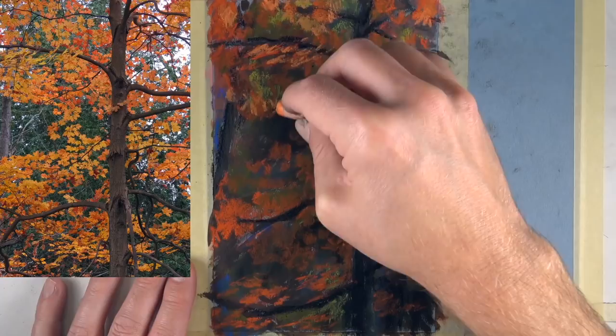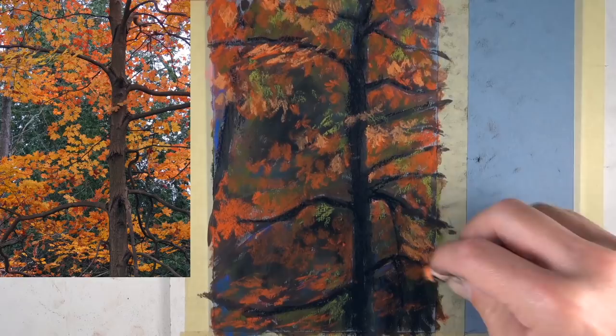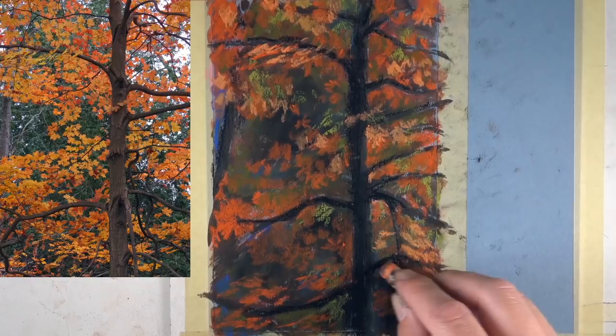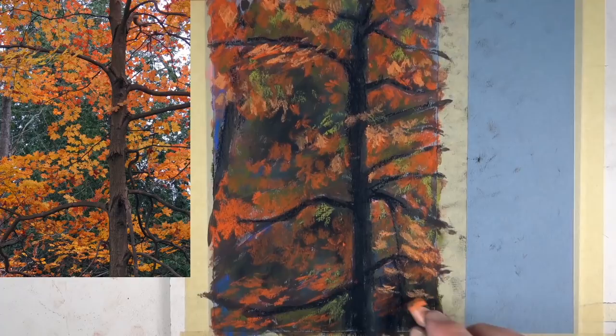Now we're going to switch over to a slightly lighter orange and start developing some of the highlights as we go. With each layer that we apply, we get more depth in the painting and more interest in our colors. You can also see some of those pops of ultramarine starting to peek out through the oranges that we apply.